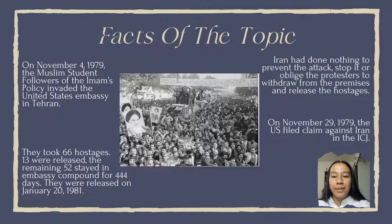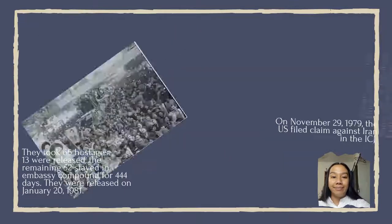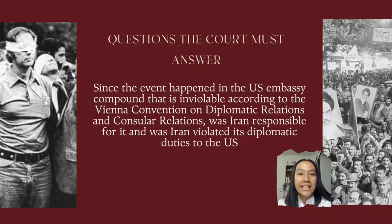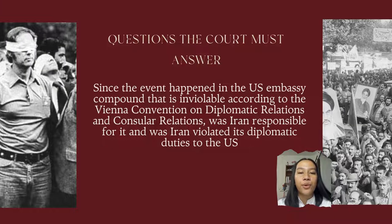Iran declined to submit formal documents and participate in the proceedings, arguing that the hostage situation resulted from years of American interference and operations against Iran. The question the court had to answer was: since the events happened in the U.S. embassy compound, which is inviolable under the Vienna Convention on Diplomatic Relations and Consular Relations, was Iran responsible for the events, and did Iran violate its diplomatic duties to the U.S.?